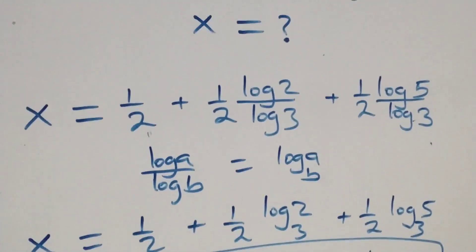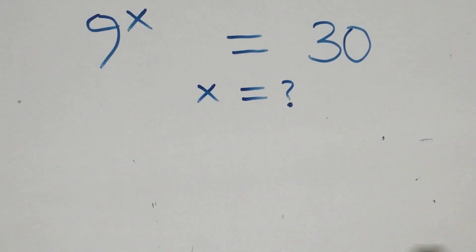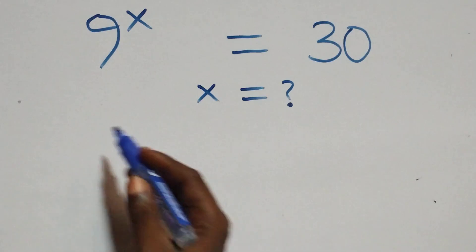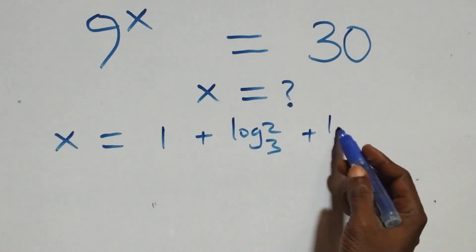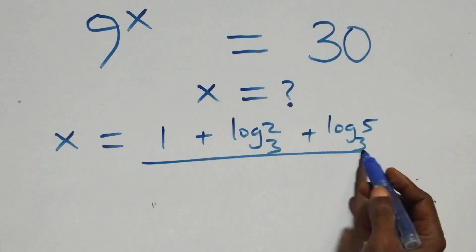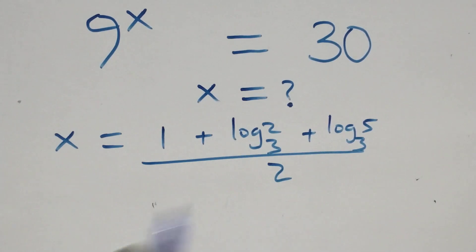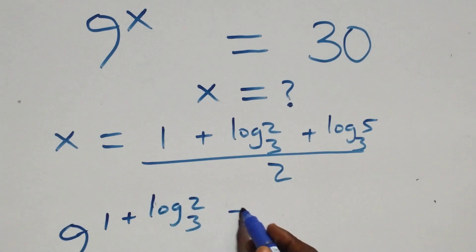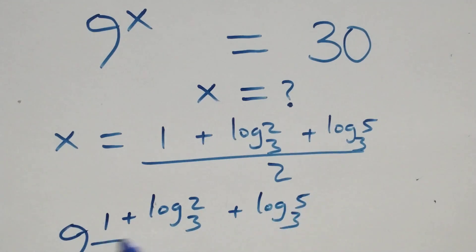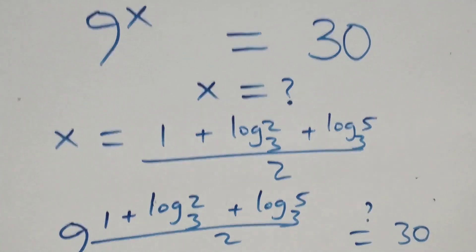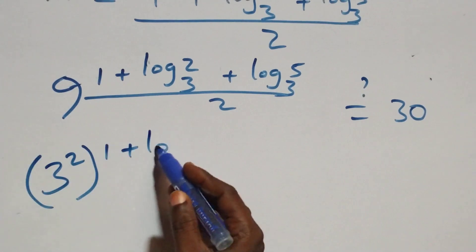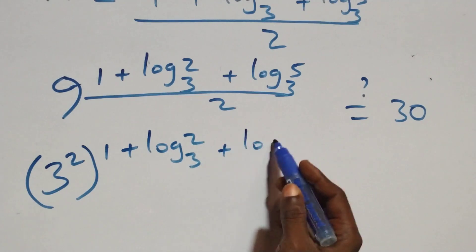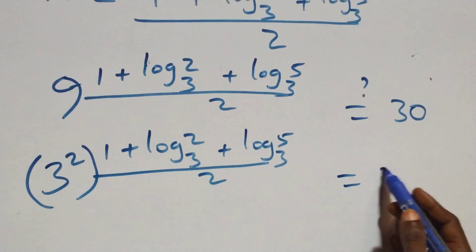Let's check whether this satisfies the given problem. We substitute x equals to (1 plus log 2 base 3 plus log 5 base 3) all over 2. What we have becomes 9 raised to the power (1 plus log 2 base 3 plus log 5 base 3) all over 2, equal to 30. We can express 9 as 3 squared, so we have 3 squared raised to that same power, equal to 30.